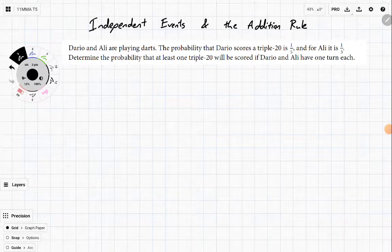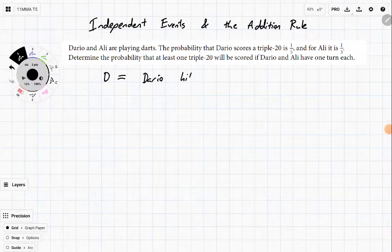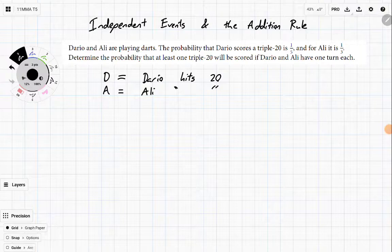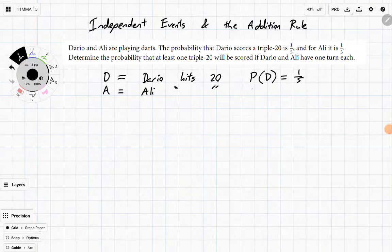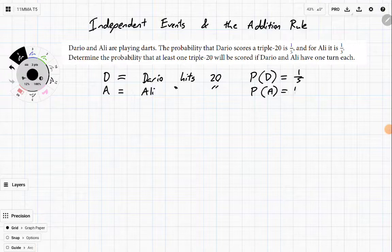So let's use some notation. Let's say D is equal to Dario hitting a 20, and we'll use the same for Ali. So A is for Ali. All righty, so therefore we have the probability of D is equal to a fifth, and the probability of A is equal to a third.